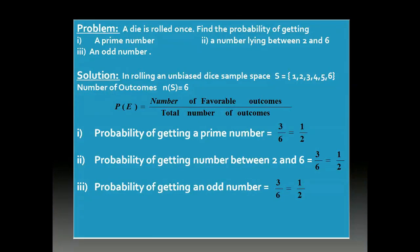Next: if a die is rolled once, find the probability of getting: first, a prime number. When a die is rolled, the possible outcomes are 1, 2, 3, 4, 5, and 6, so the sample space N(S) is 6. The probability equals the number of favorable outcomes divided by the total number of outcomes. For a prime number, out of 1 to 6, we have three prime numbers: 2, 3, and 5. So the probability is 3 by 6, which equals 1 by 2.